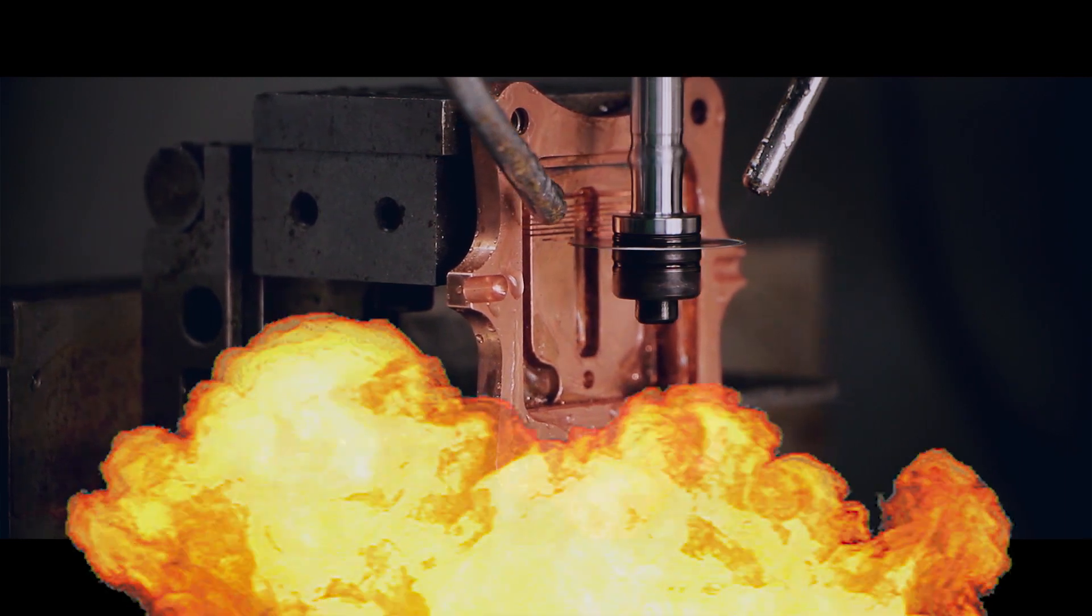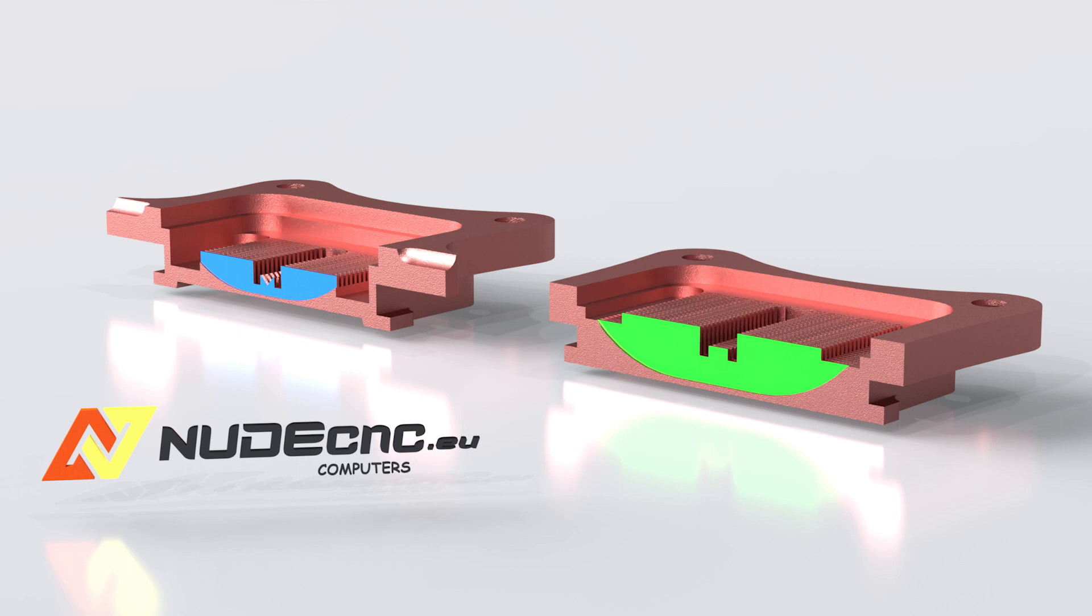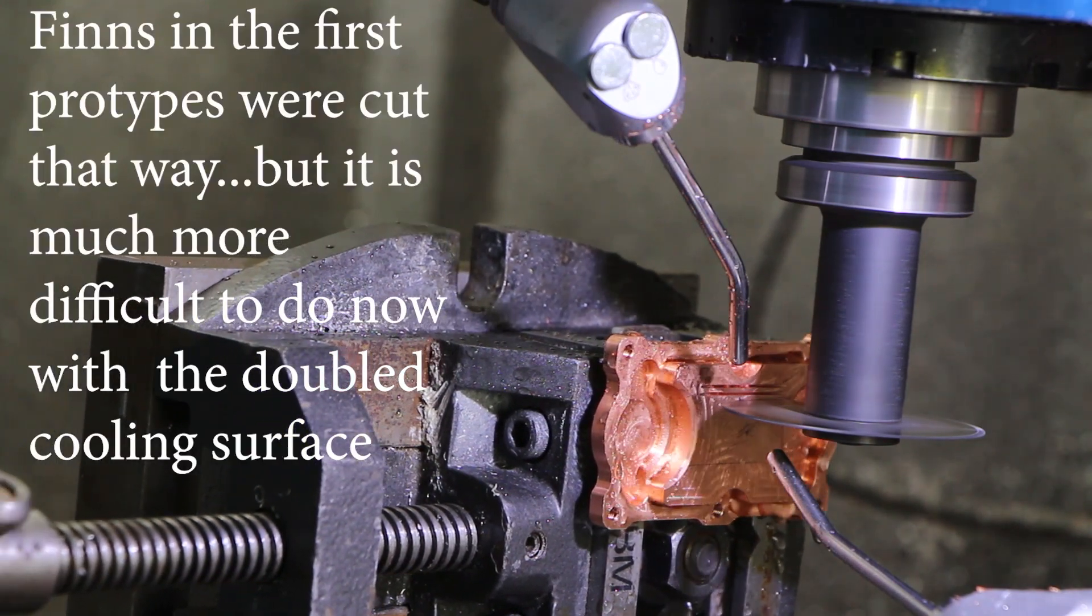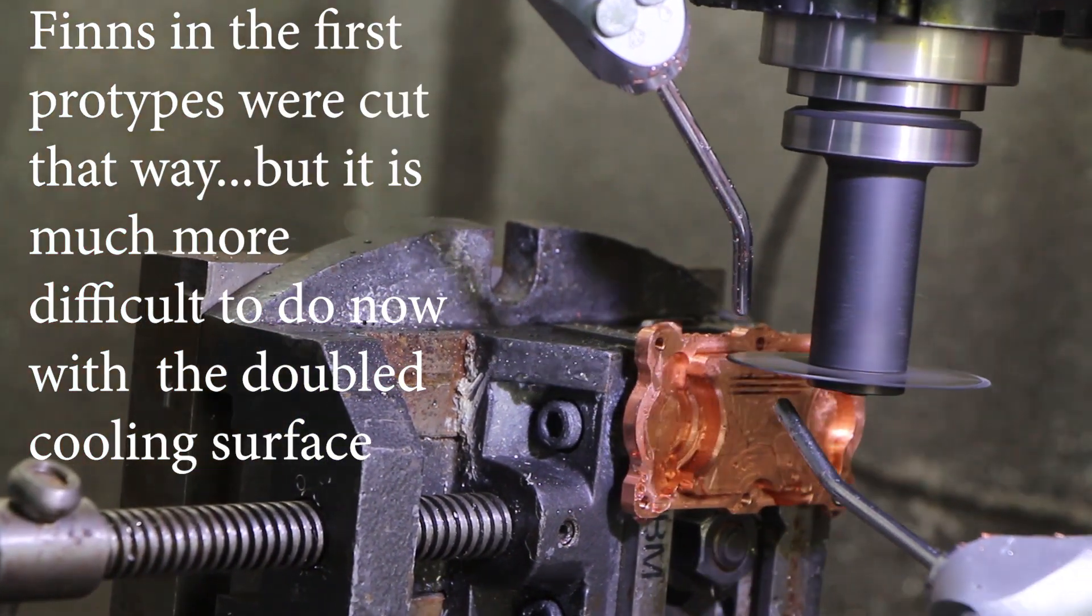First is cutting fins in the Encore. Because we've doubled the cooling surface, we created quite a lot of problems in the production, which after many broken tools, we finally start to overcome.